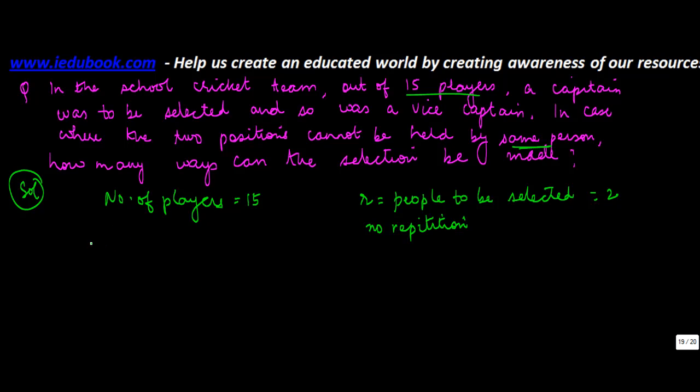Now, we know that the number of permutations, in case where no repetitions are allowed, is nPr equals factorial n upon factorial n minus r.